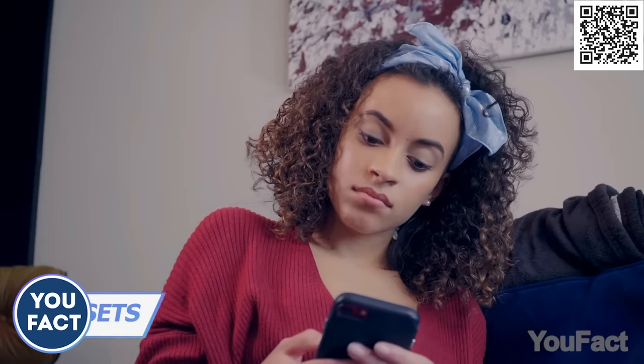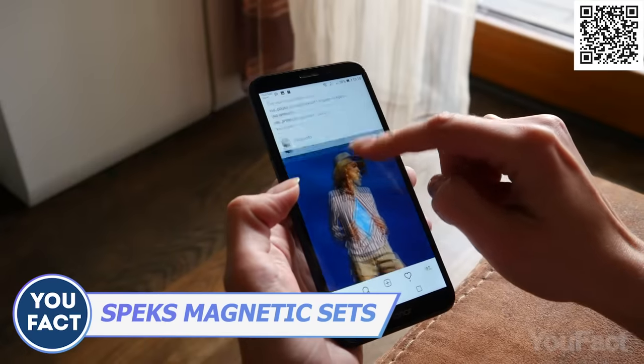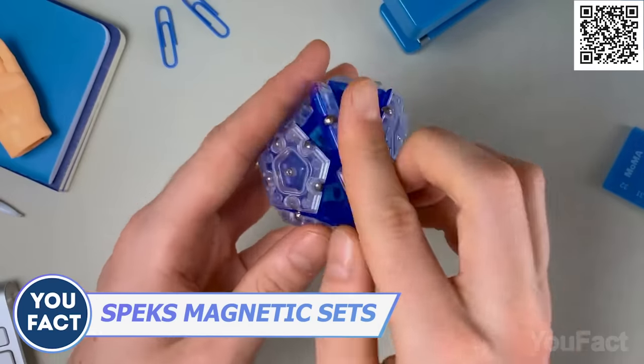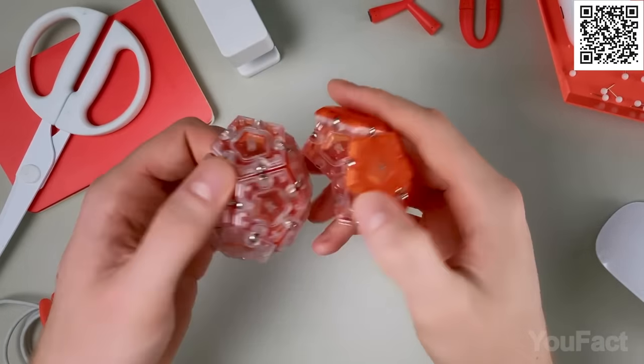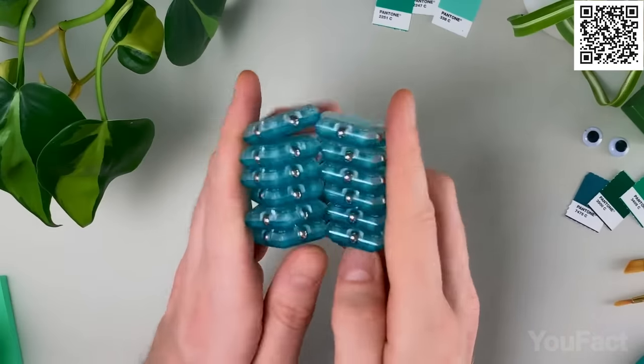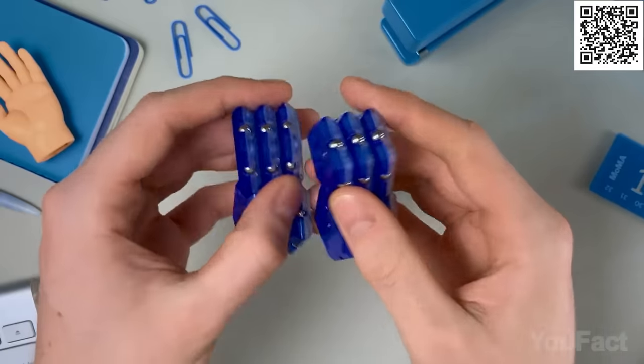There's a better way to kill time than scrolling your Instagram. And definitely more relaxing. These pentagons are equipped with strong rare-earth magnets which allow you to construct various figures easily. There are more than 100 combinations, and you can always create your own ones.